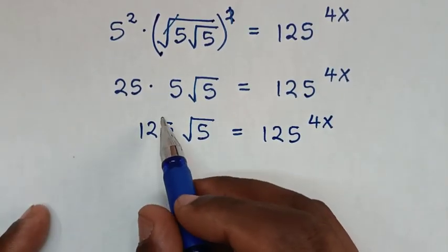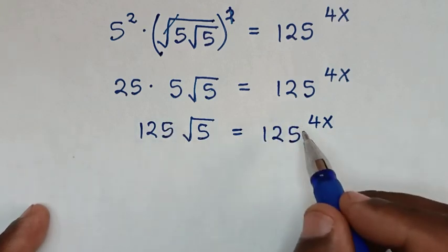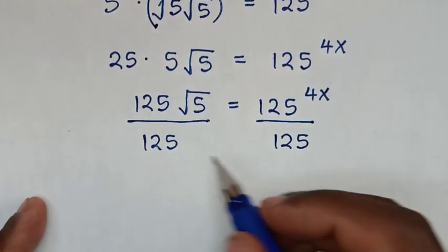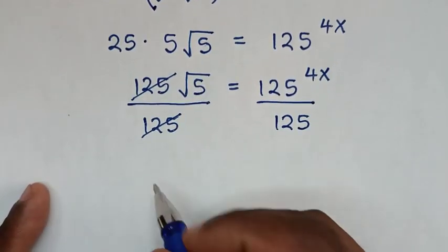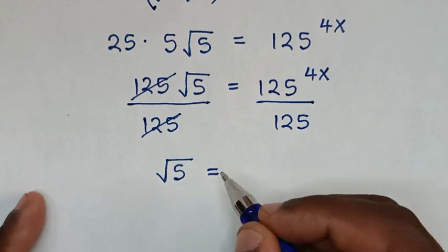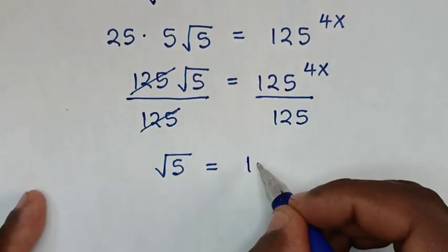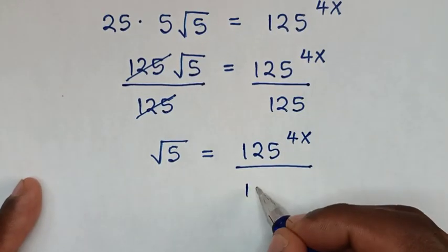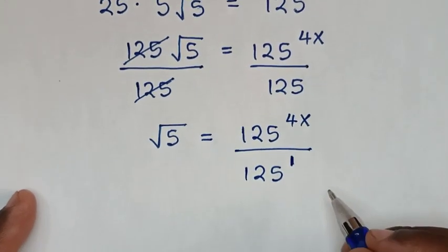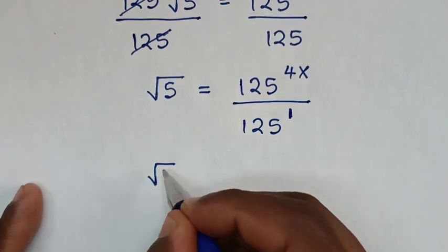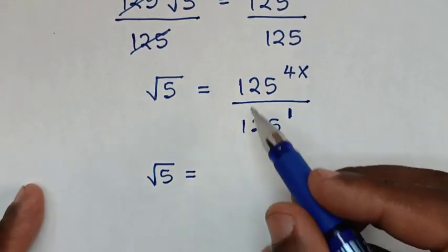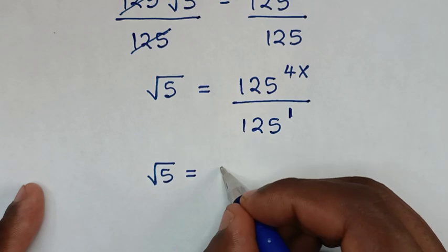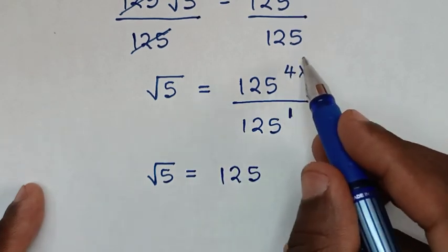Now we have 125 on both sides. We divide both sides by 125 — these cancel — giving √5 = 125^(4x) over 125^1. Using the division of exponents with the same base, this becomes √5 = 125^(4x − 1).